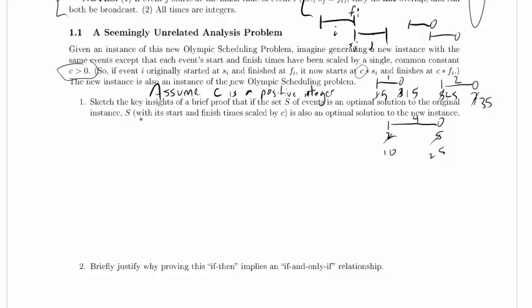Okay, now sketch the key insights of a brief proof that if the set S of events is an optimal solution to the original instance, S with its start and finish time scaled by C, so the same set of events but projected into the new instance, is also an optimal solution to the new instance.